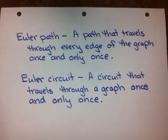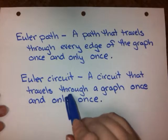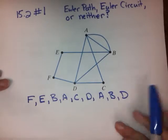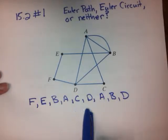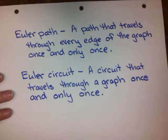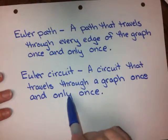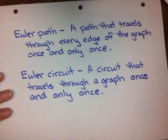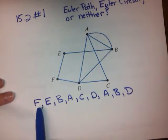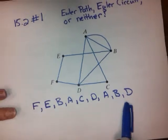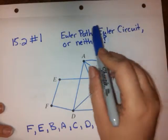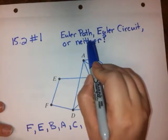One clue we have here is that they've given us a list of vertices: F, E, B, A, C, D, A, B, D. I don't even have to draw anything to know it can't be an Euler circuit. If it were an Euler circuit, it would stop and start on the same vertex. But here we're starting on F and stopping on D, so right off the bat there is no way for this to be an Euler circuit. So either it's an Euler path, or it's neither.